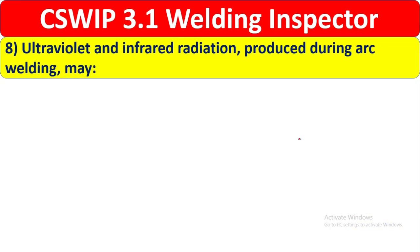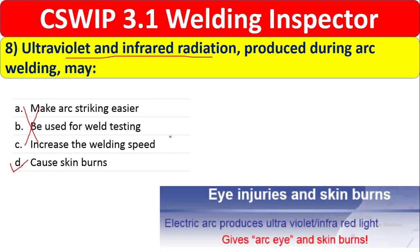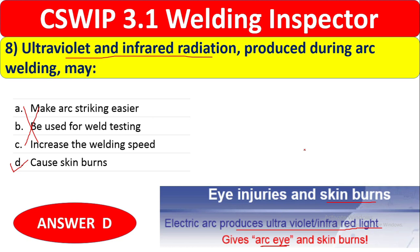Question 8: Ultraviolet and infrared radiation produced during arc welding may do what? Options include making arc striking easier, being used for weld testing, increasing welding speed, or causing eye injuries and skin burn. Definitely, ultraviolet and infrared radiation from the electric arc causes arc eye and skin burn. Option D — eye injuries and skin burn — is the correct answer.